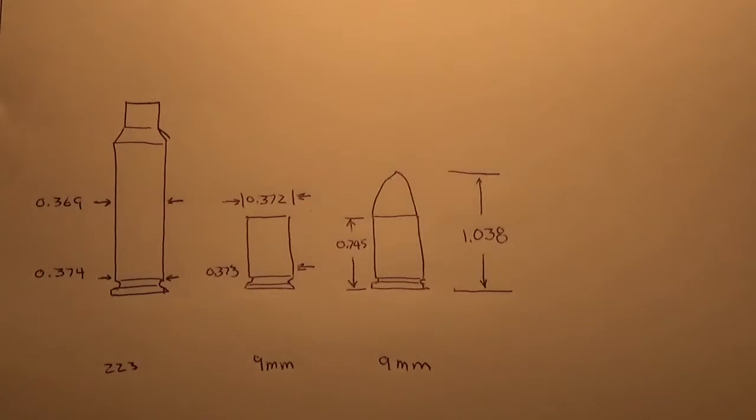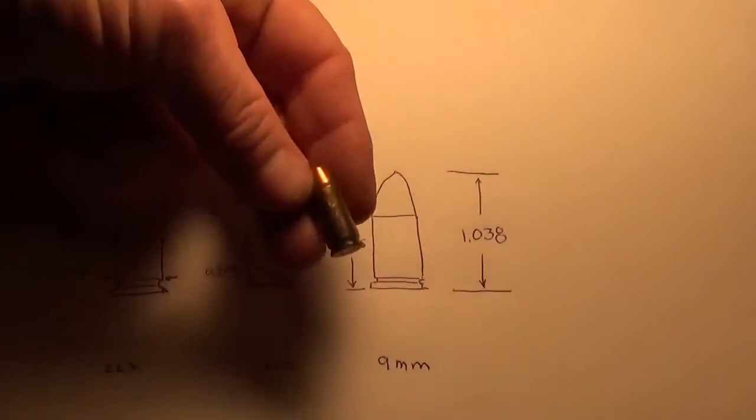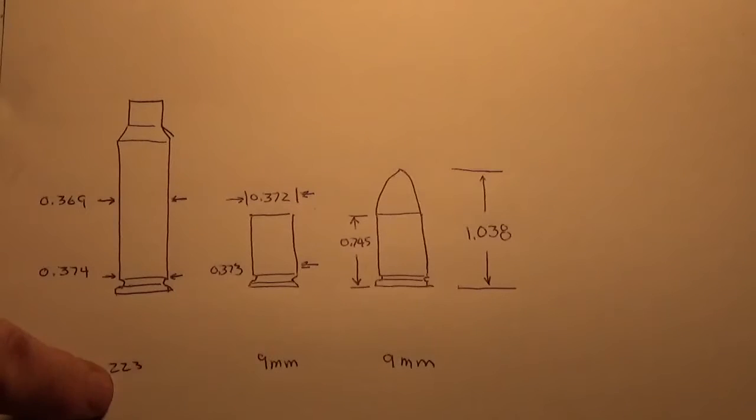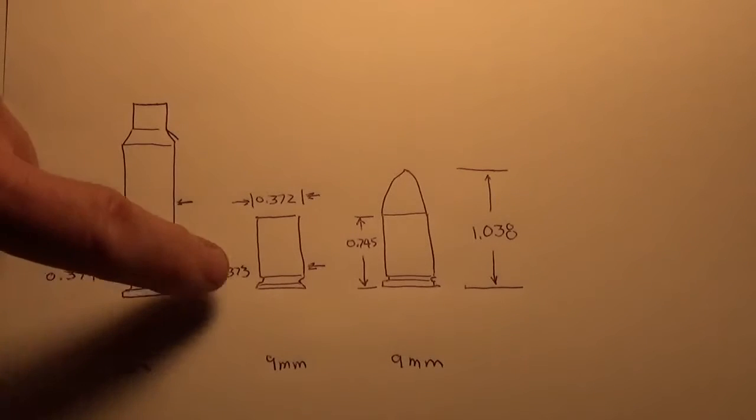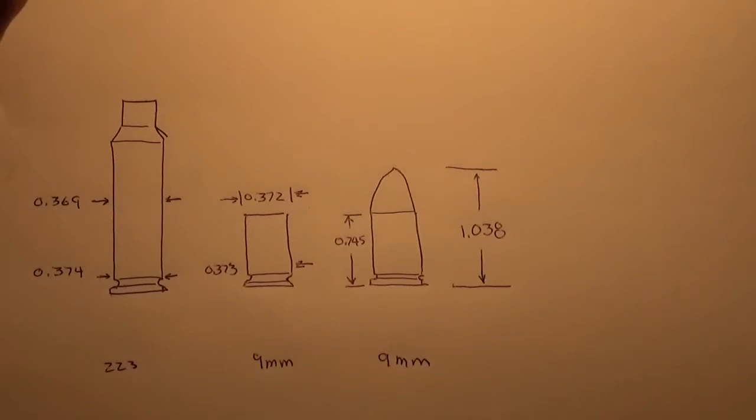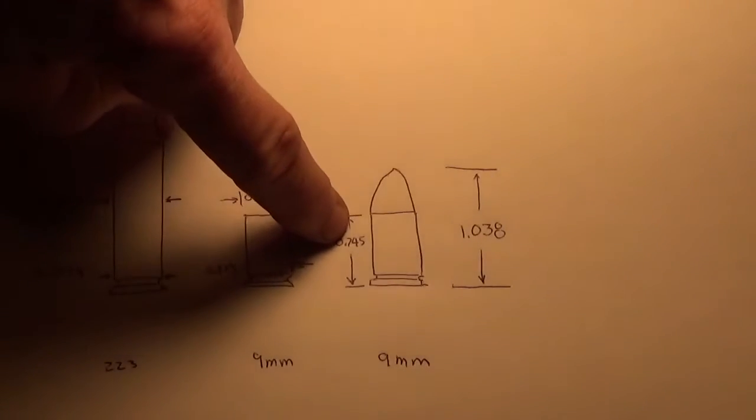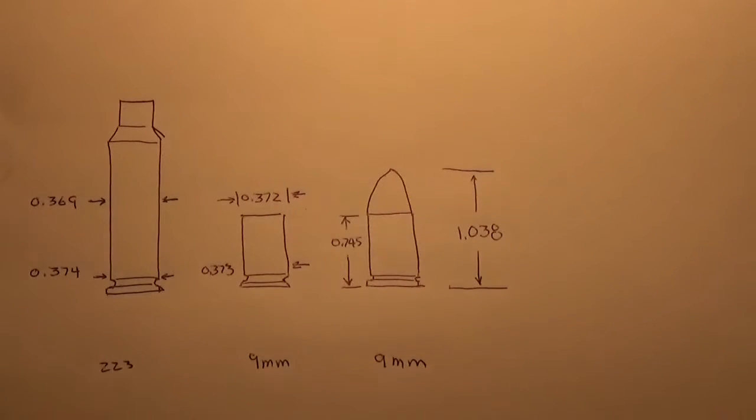So we'll start with just the logistics. We have a .223, an empty or spent 9mm, and a regular 9mm. Put the base dimensions, put the mid dimensions. You can see .374, .373. So .223 will fit in a 9mm or a .380, .369, .372. Those are close enough. Once we cut this and you shoot it the first time, it'll neck up. The overall length of the casing is .745, but this has to be a little bit bigger. The overall length of a 9mm is 1.038. It doesn't really matter with a .223.